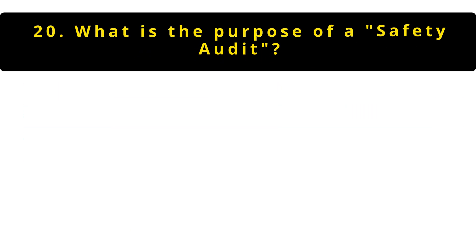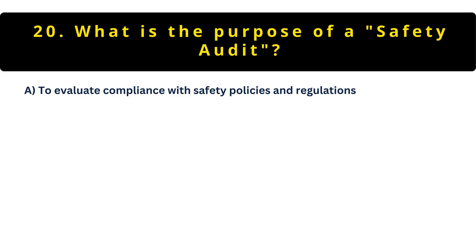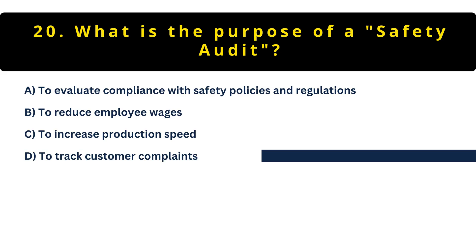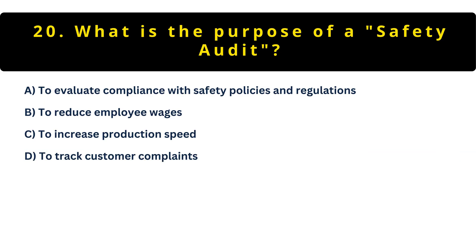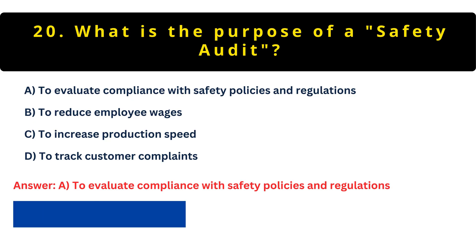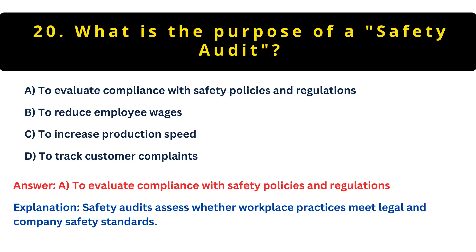Question 20: What's the purpose of a safety audit? Option A: To evaluate compliance. Option B: To reduce wages. Option C: To increase production speed. Option D: To track complaints. The answer is A — to evaluate compliance with safety policies. A good safety audit isn't about finding fault; it's about identifying opportunities to make your workplace safer for everyone.